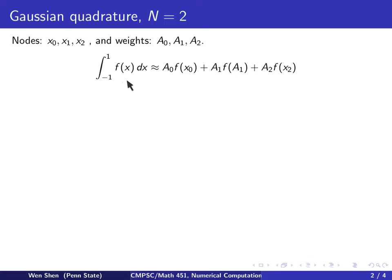So my rule would look like this. The integral of f over negative 1 to 1 will equal to A0 f(x0) plus A1 f(x1) plus A2 f(x2).